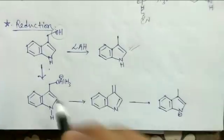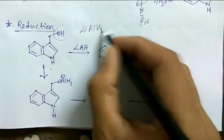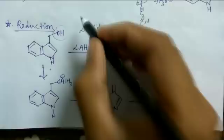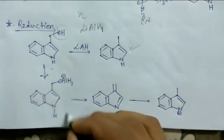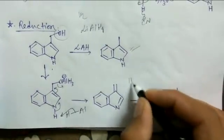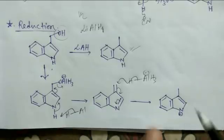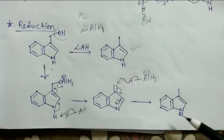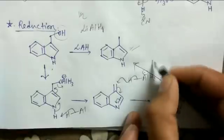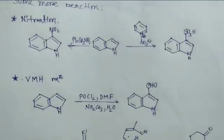The LiAlH₄ reduction mechanism proceeds as follows: first, H⁻ from LiAlH₄ abstracts the OH proton to form H₂. A complex forms, then another hydride attacks, giving an intermediate with a negative charge. Since no further hydride attack is possible at that stage, the reaction stops. Workup with H⁺/H₂O gives the reduced product, with the aromatic ring remaining unreacted throughout.